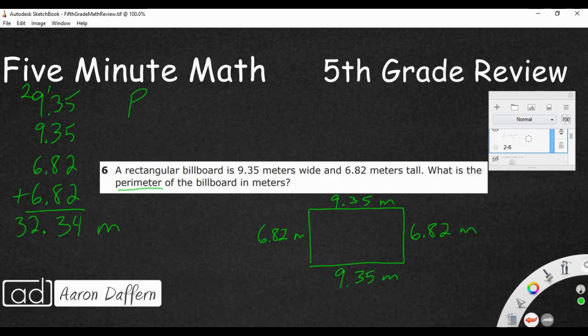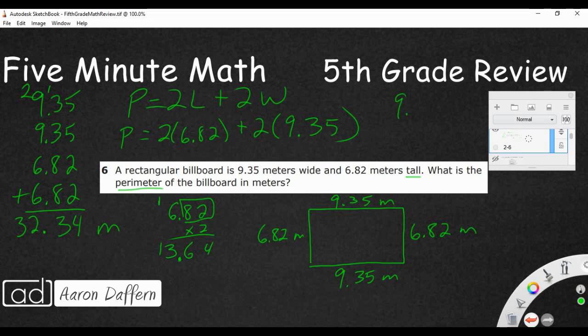But, we also have an equation we can use. Double the length plus double the width. And so, if we wanted to do that, we could say perimeter equals 2 times 6.82 plus 2 times 9.35. So, if we wanted to do that, we would take 6.82 and double it. And that's going to be 13.64. I've got 2 digits behind the decimal in the factor. So, 2 digits behind the decimal in our product. And let's take our 9.35. Let's double that as well.